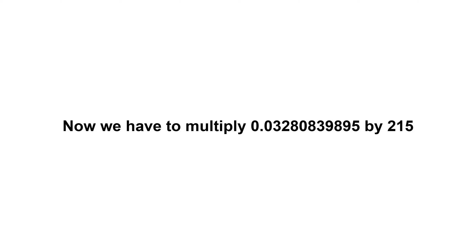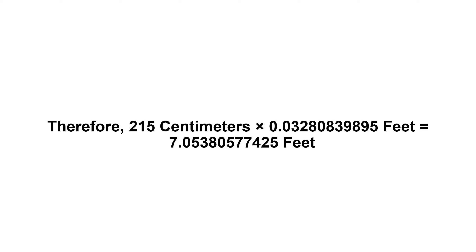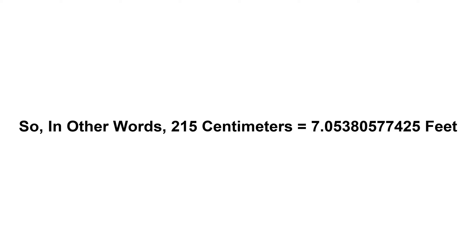Now we have to multiply zero point zero three two eight zero eight three nine eight nine five by two hundred and fifteen. Therefore, two hundred and fifteen centimeters times zero point zero three two eight zero eight three nine eight nine five feet equals seven point zero five three eight zero five seven seven four two five feet.